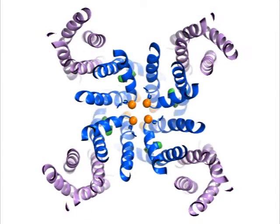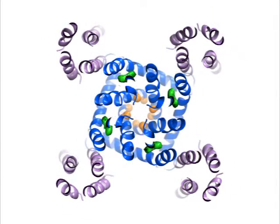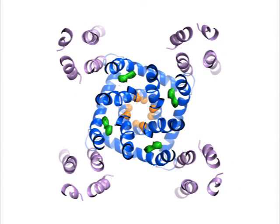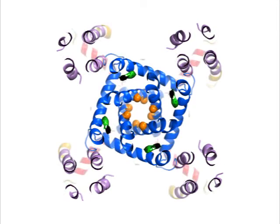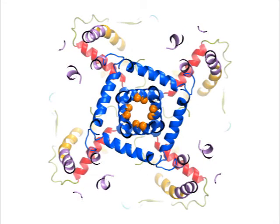Just below the pore helices is a newly discovered binding site for a TRPA1 antagonist, depicted as green density. Given this location, the antagonist may act on the upper gate to close the channel. Further down, two residues from each S6 helix make a second constriction, the lower gate.